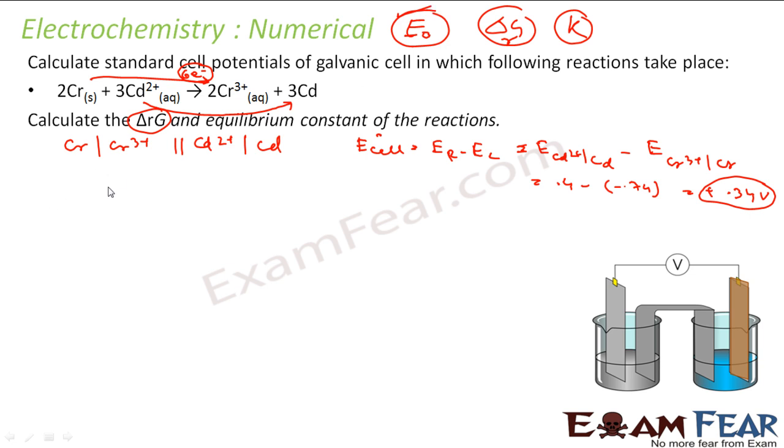Second is ΔG°. ΔG° is nothing but minus nFE°. It is minus n which is 6, F is 96487 coulomb per mole, and E° is 0.34 volt.